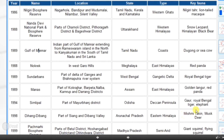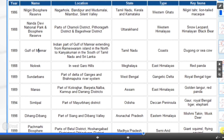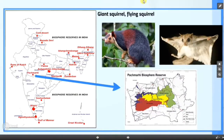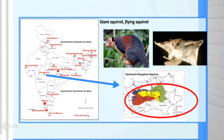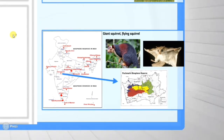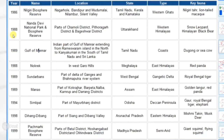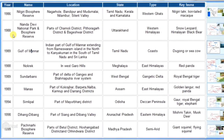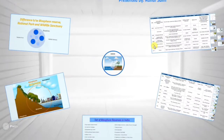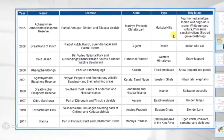The next biosphere is located in Madhya Pradesh and its name is Pachmarhi. Its key fauna are the Giant Squirrel and Flying Squirrel. On the map, the entire colored region shown is the Pachmarhi biosphere. The table may look a bit confusing right now, but you'll understand it better on the map — and at the end I will also give you a trick so you never forget these.